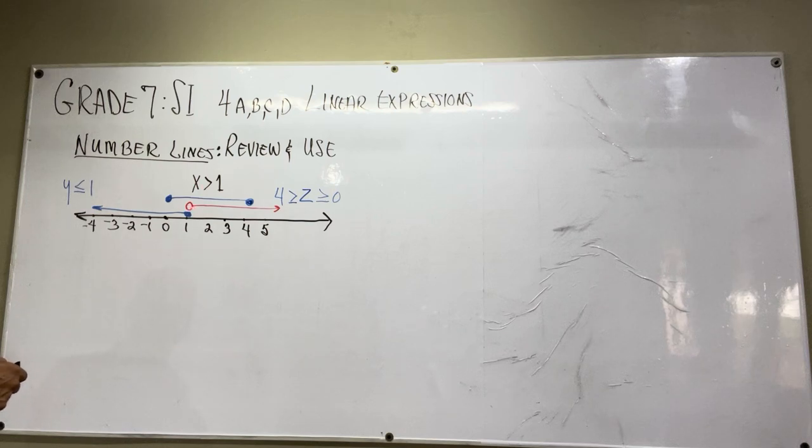Now this says x is greater than one and this line tells us it's going on, so it could be any number that's bigger than one.